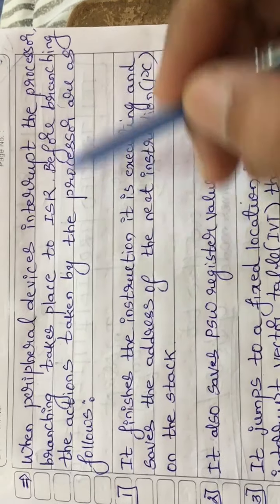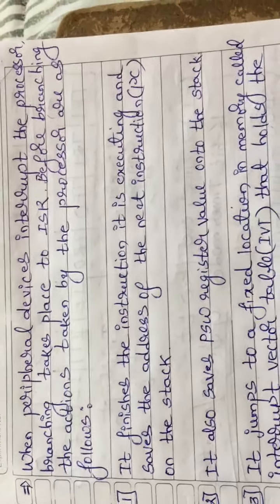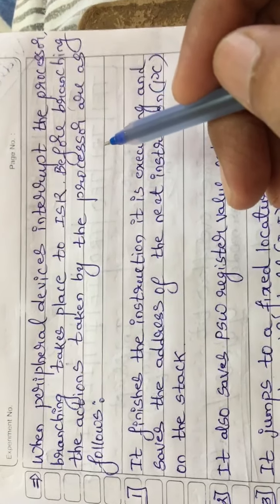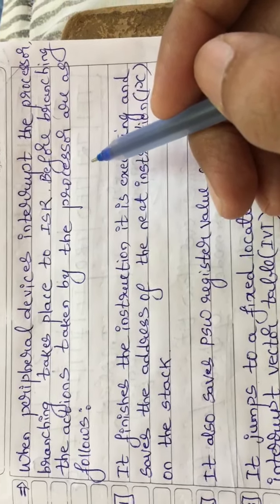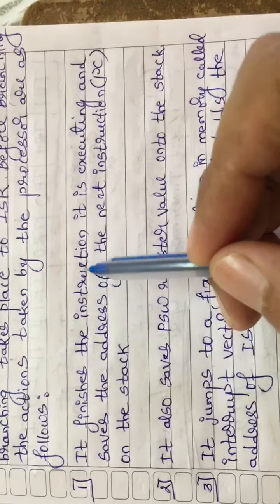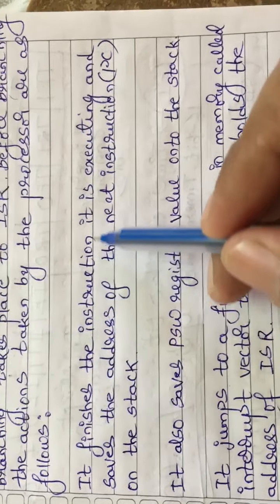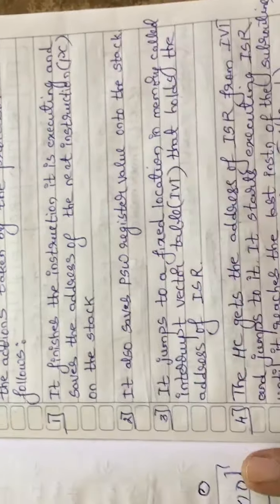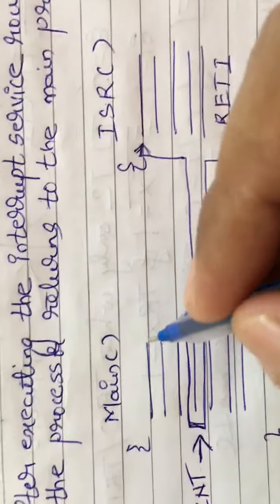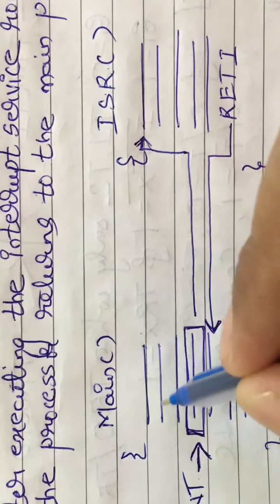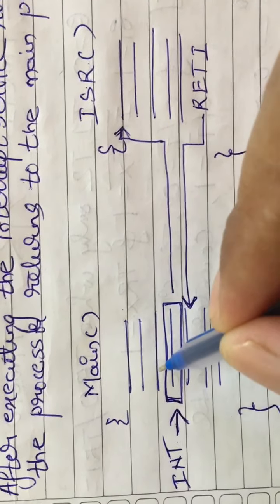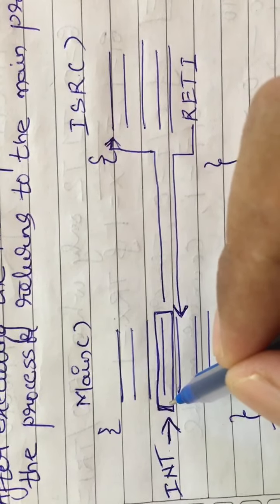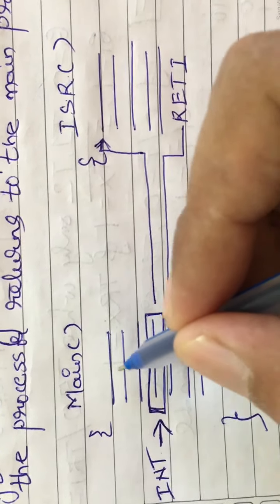That routine is called the interrupt service routine. The microcontroller jumps to that particular address, and in the interrupt service routine there will be instructions with respect to that particular service routine. After the execution of all the instructions in the interrupt service routine, it has to jump back to the main program. In order to return to the main program, there is one instruction called RETI — return from interrupt. After execution of all ISR instructions, it jumps back to the main program and the remaining instructions continue.